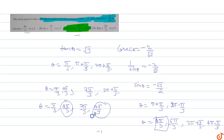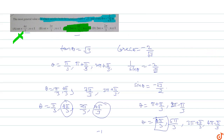The value 7pi by 3 was not common in both sets, so option A is incorrect. Option C is the correct option. The general value of theta equals 2n pi plus 4pi by 3 satisfies both equations: tan theta equals root 3 and cosec theta equals minus 2 upon root 3. So this is the answer for this question.